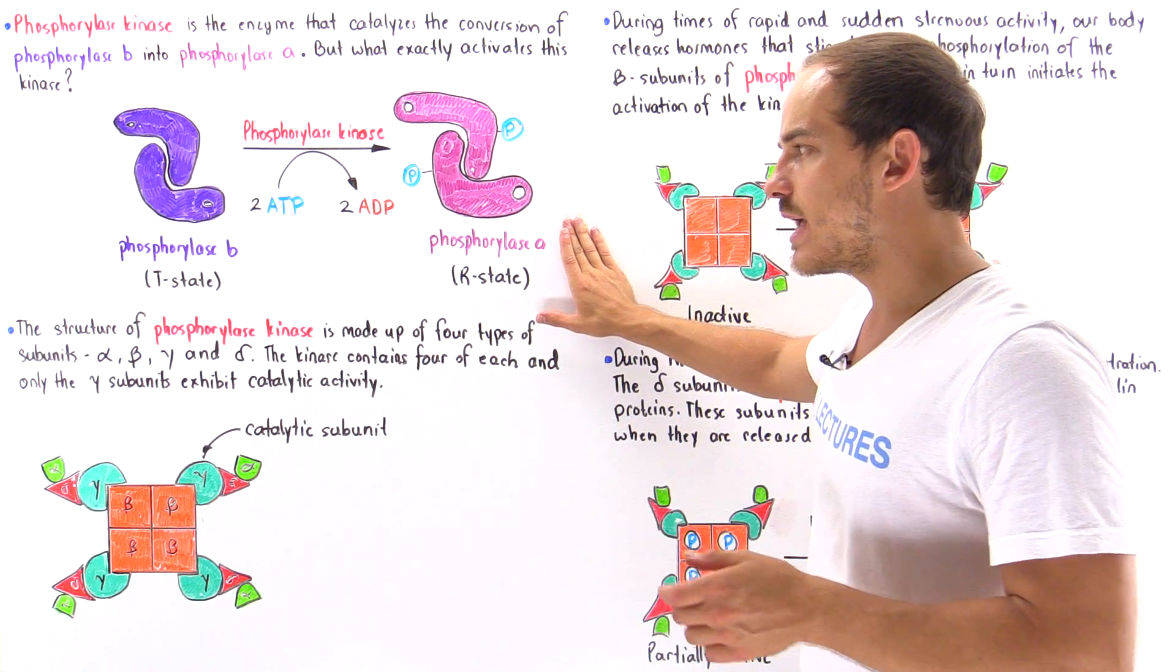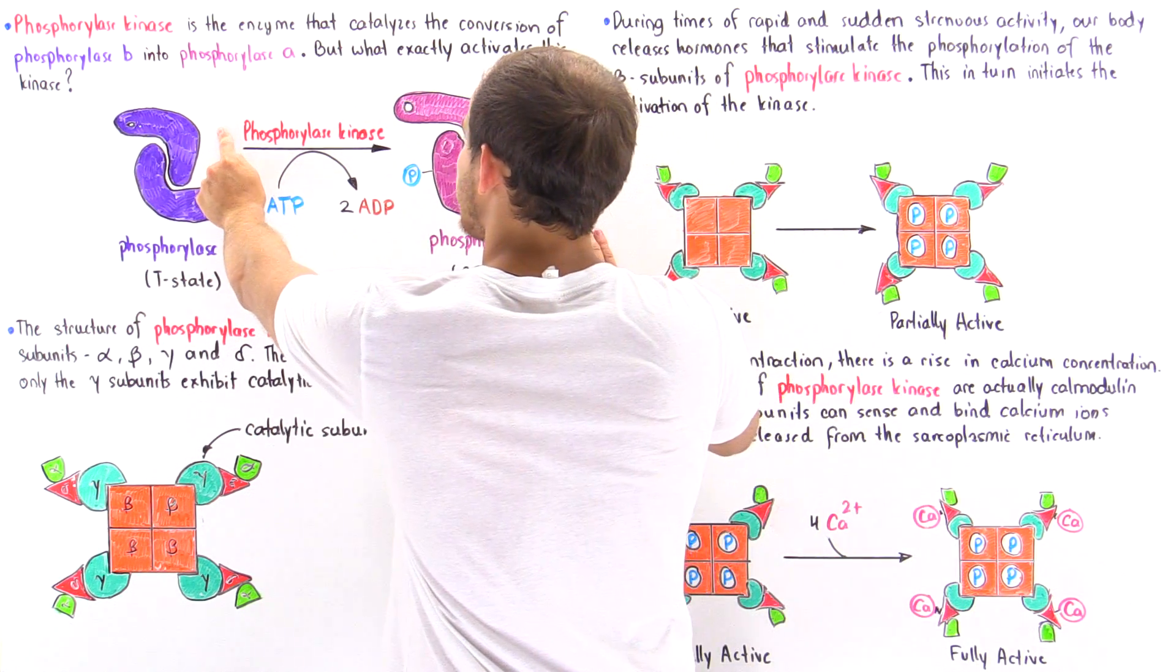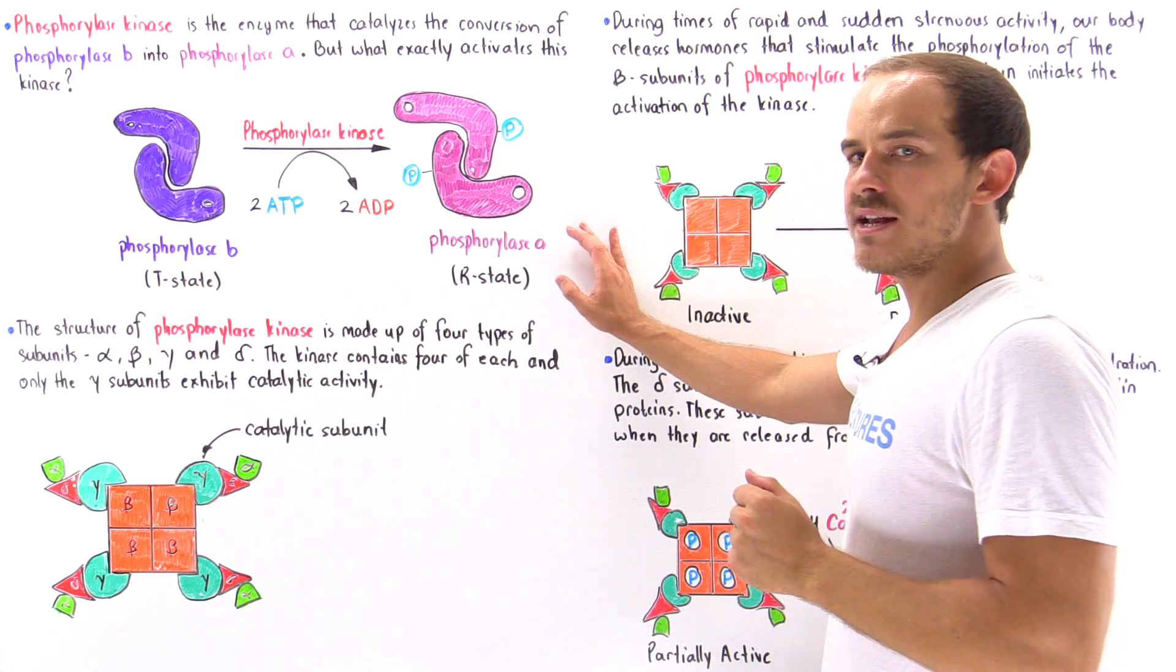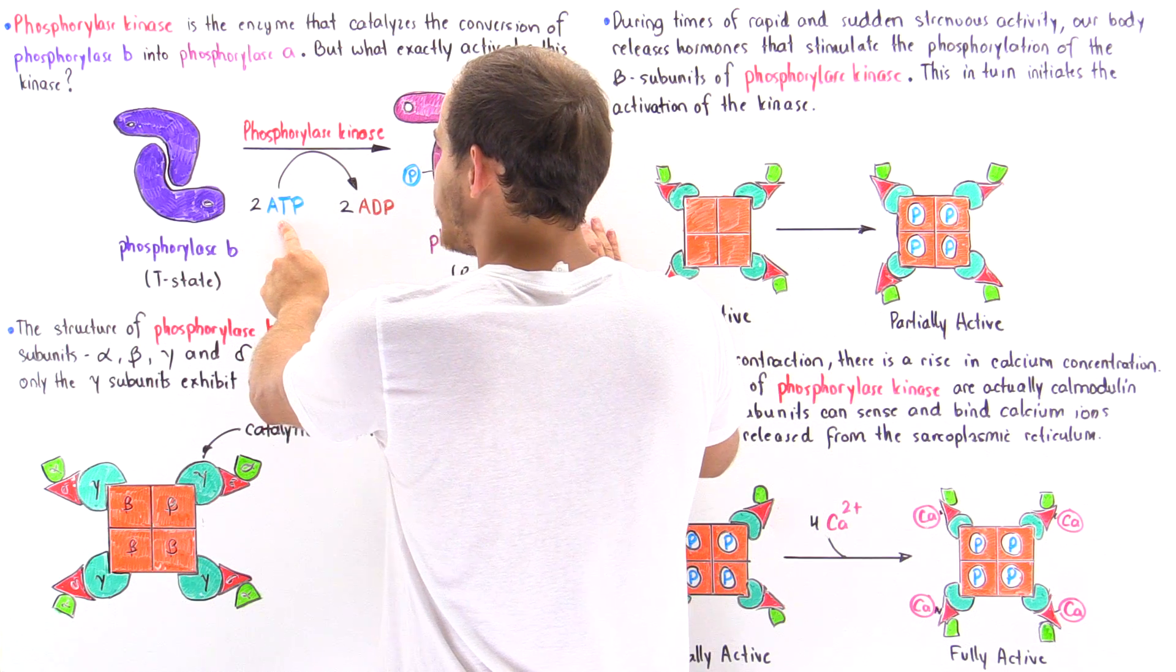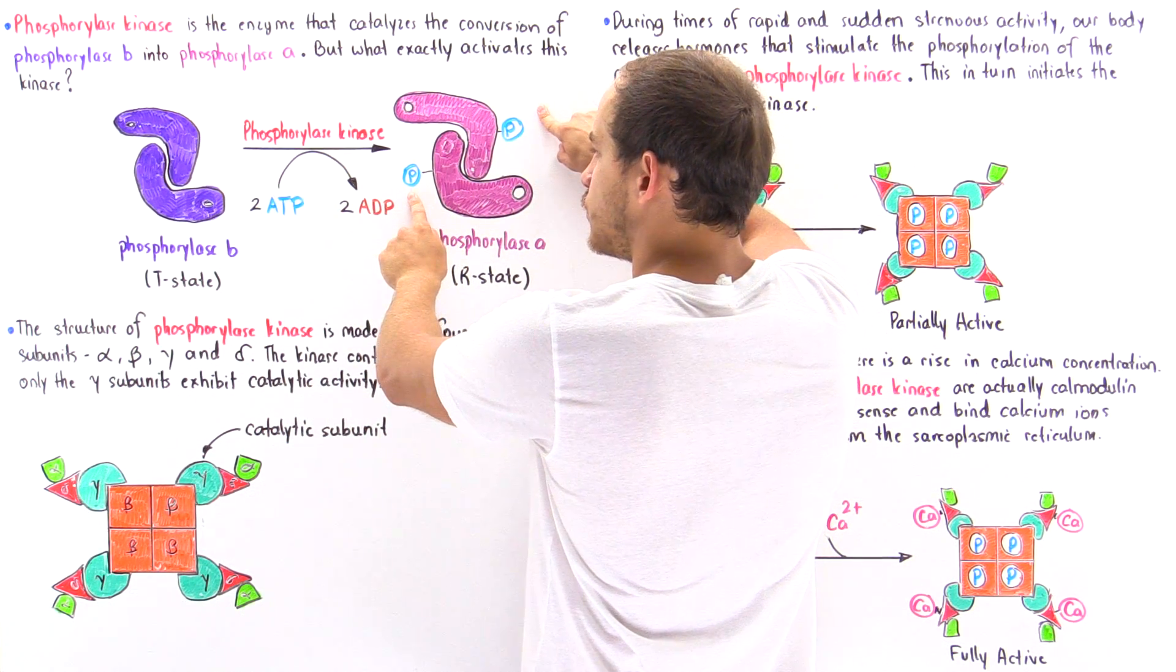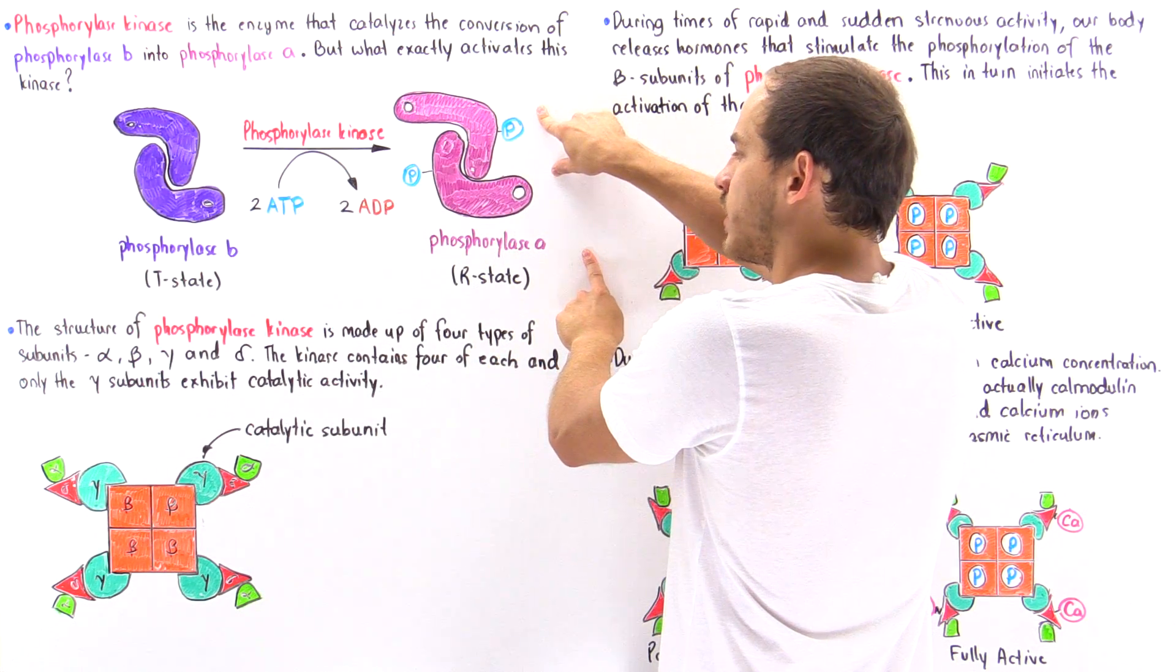Now we also said that the enzyme that catalyzes this step is known as phosphorylase kinase. So ultimately what phosphorylase kinase does is it takes phosphoryl groups from two ATP molecules and places them onto serine residues found on phosphorylase B, and that creates phosphorylase A.